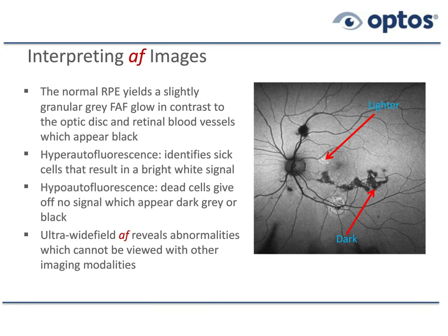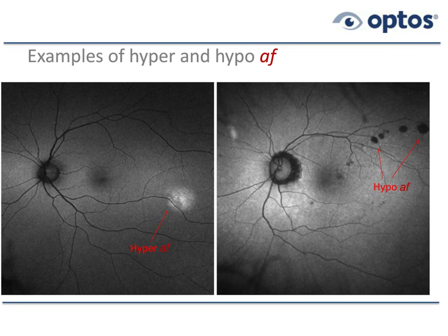Examples of hyper and hypoautofluorescence: on the left you can see a bright zone of hyperautofluorescence, meaning the RPE at that level is sick or metabolically overactive. On the right, zones of hypoautofluorescence — in this instance, a CHRPE lesion. The tissue is still present and the RPE is still there, but there are no photoreceptors above it, so lipofuscin is not being produced. This is one of two exceptions to the general rules.